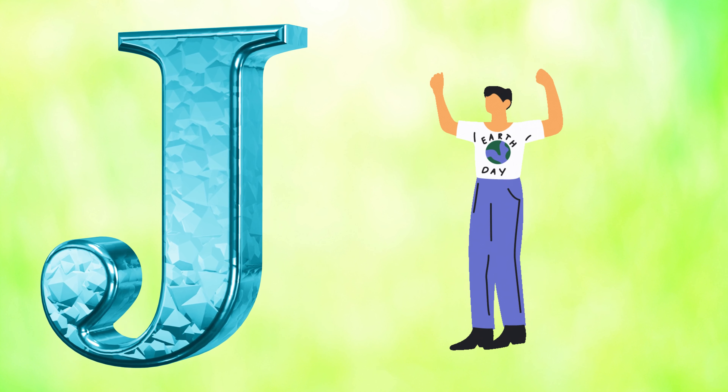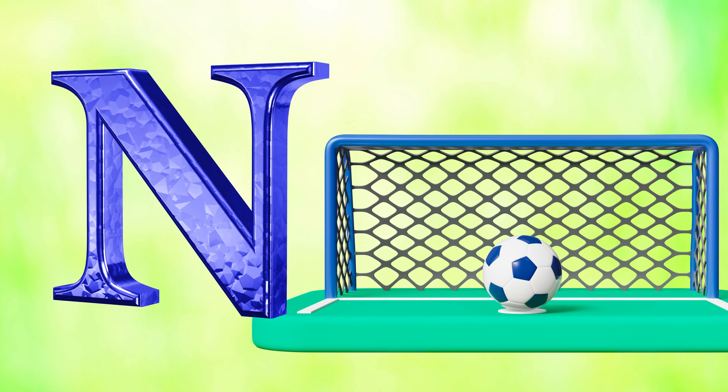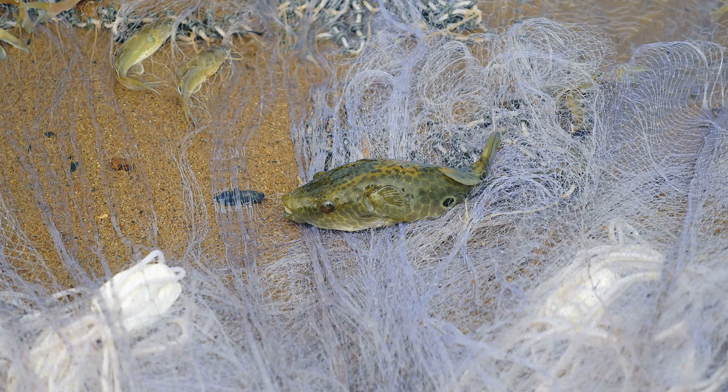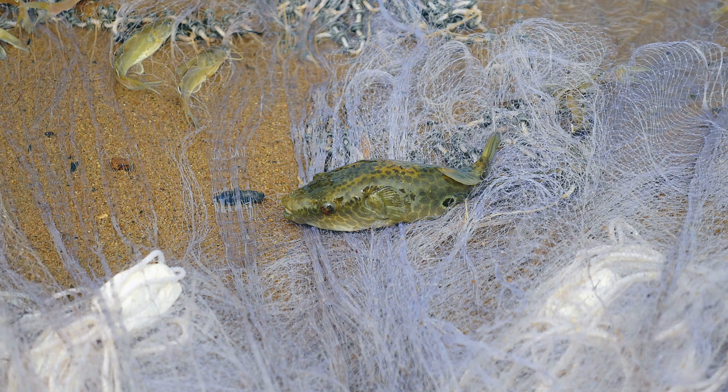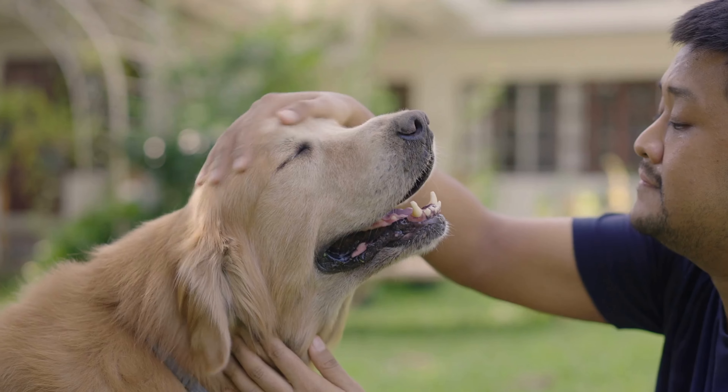M is for Mat, M-M-Mat. N is for Net, N-N-Net. O is for Orange, O-O-Orange. P is for Pet, P-P-Pet.